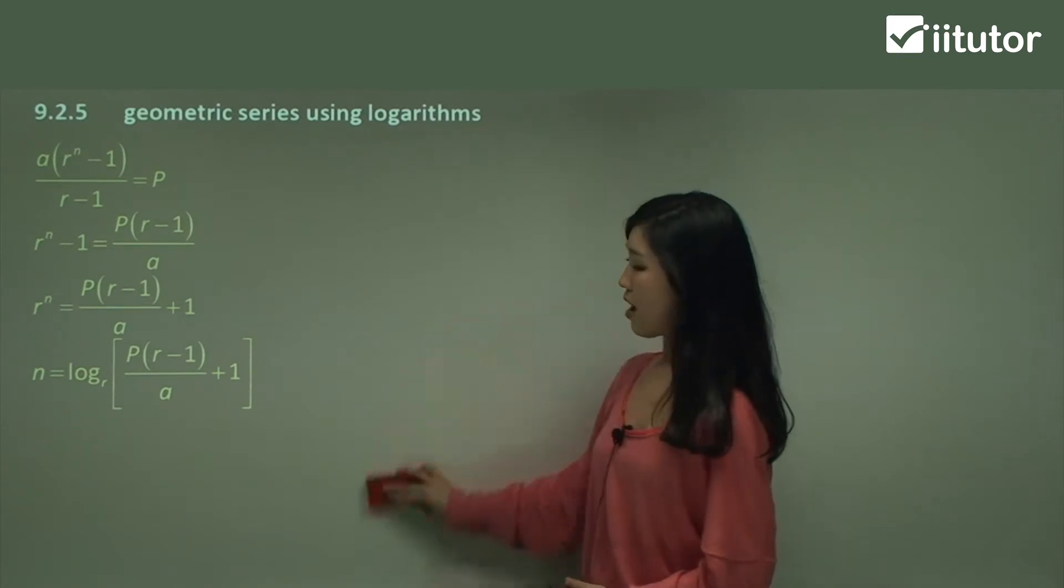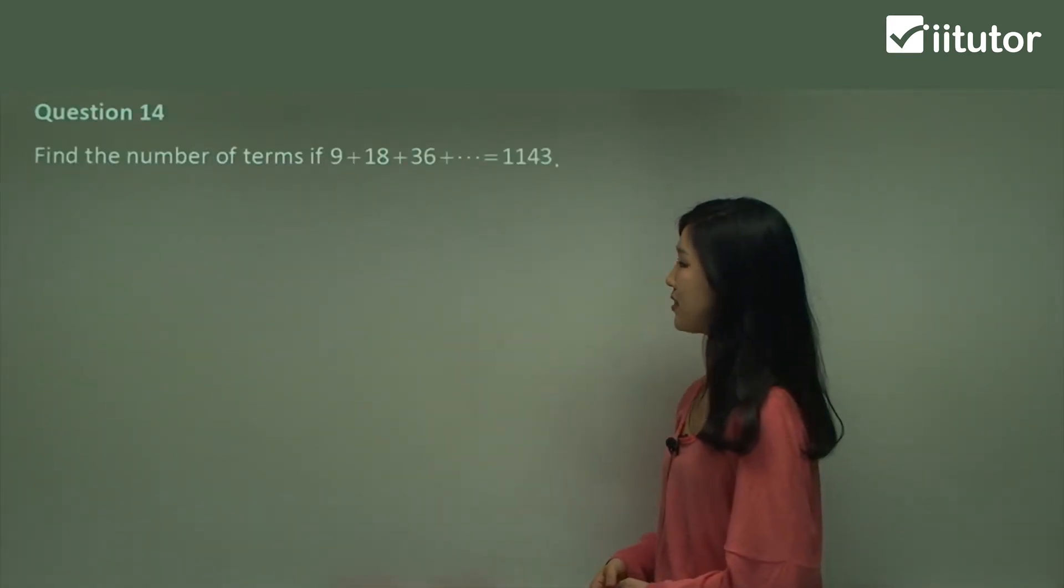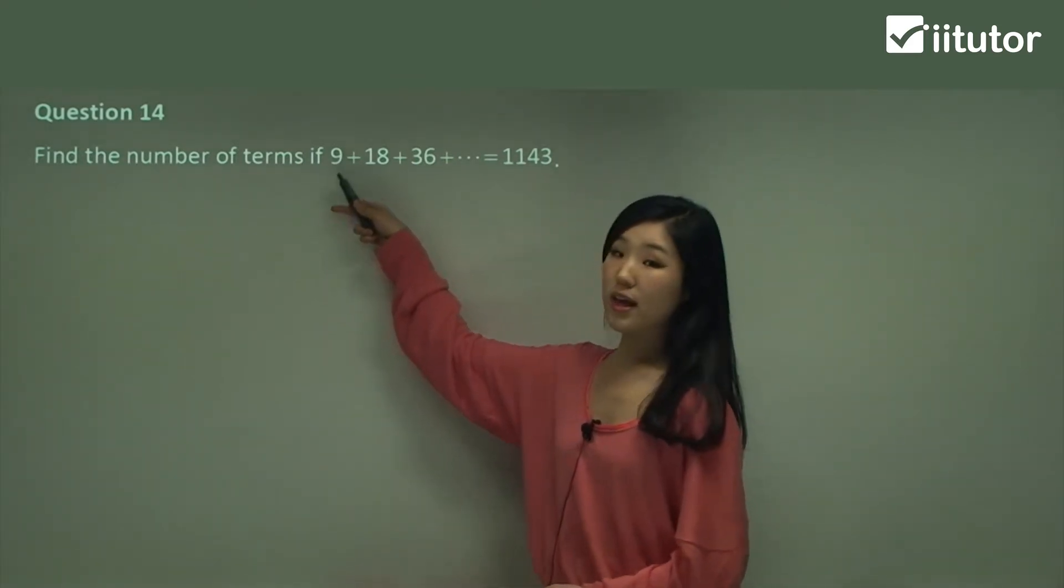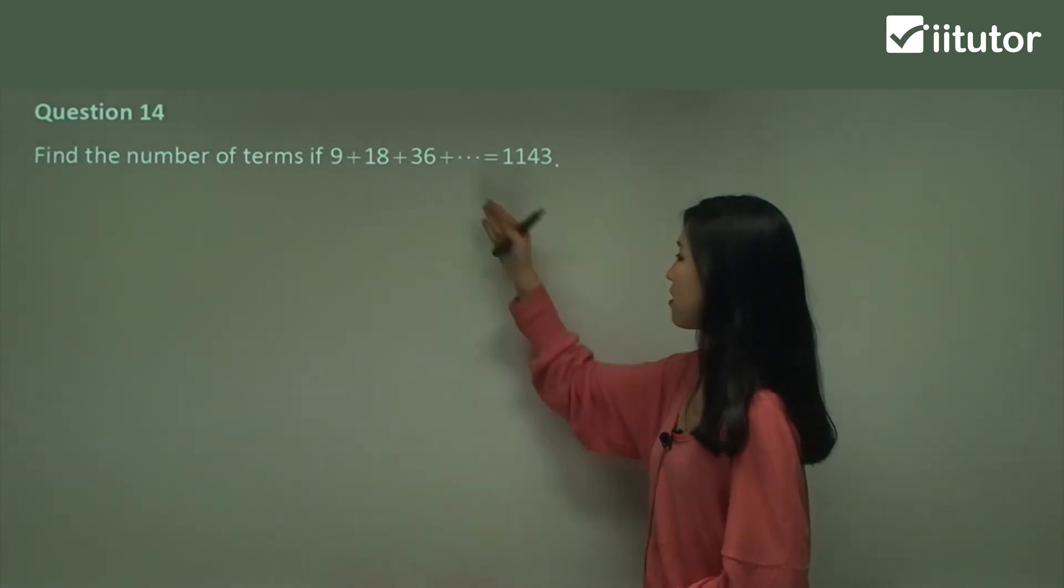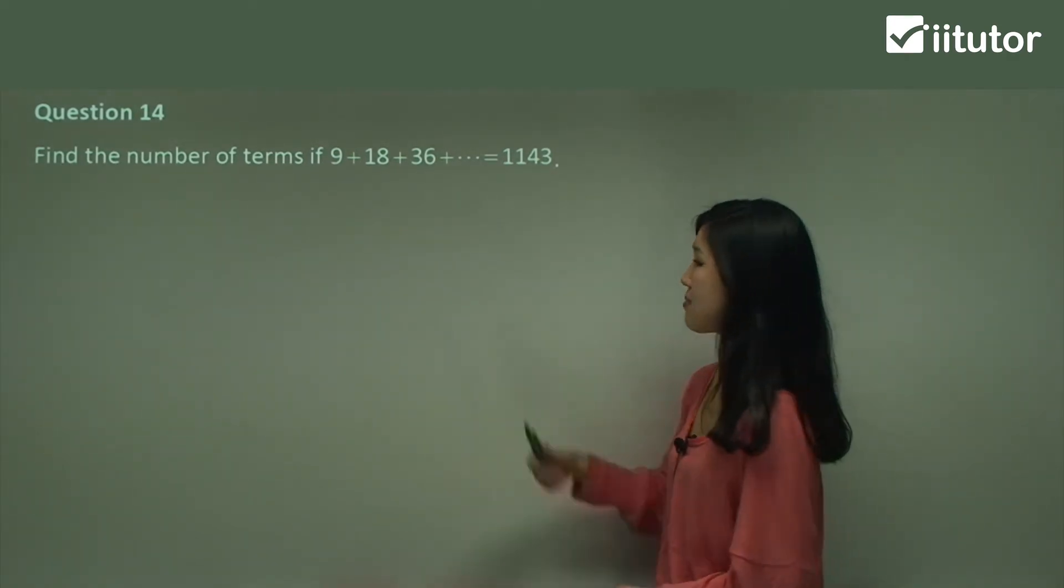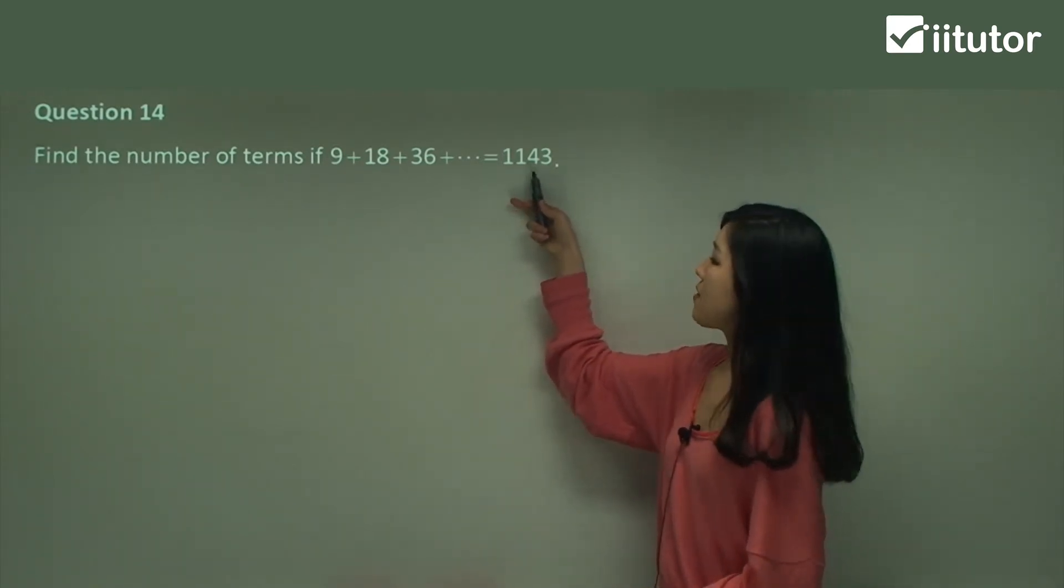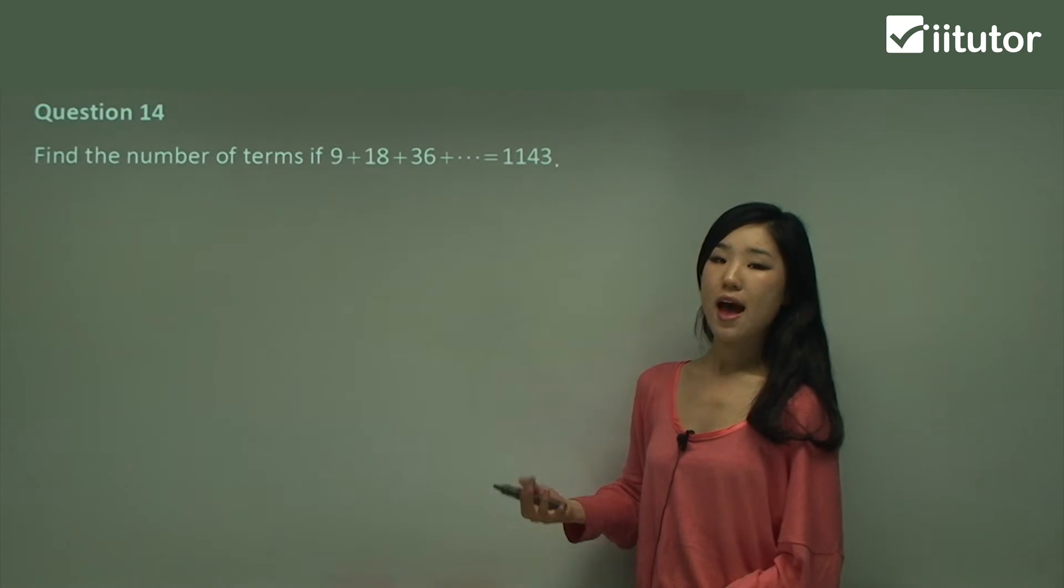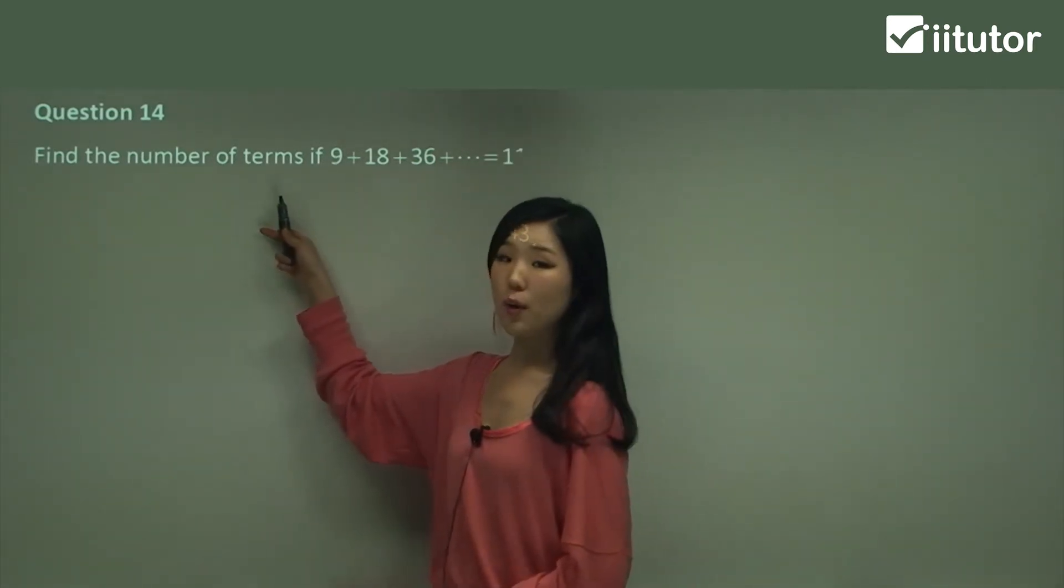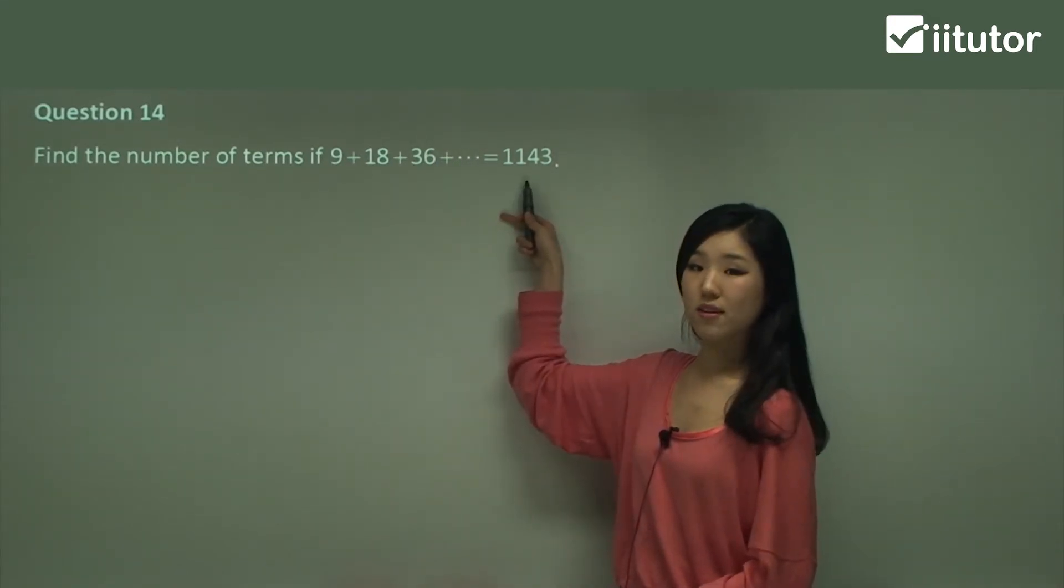Okay, and now we might go into some questions using some log rules. So let's have a look at question 14. Find the number of terms if 9 plus 18 plus 36 plus blah blah blah equals 1143. So this time they actually give us what the value of the summation is. It's going to be 1143. Our job is to find the number of terms in this series that make a sum of this.